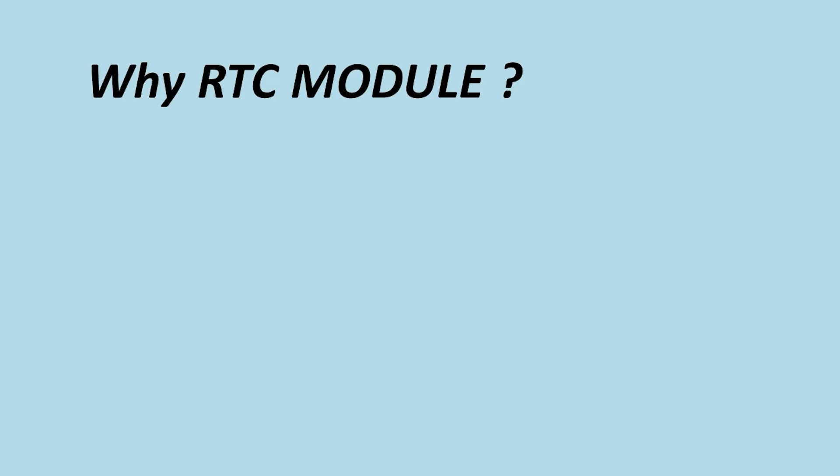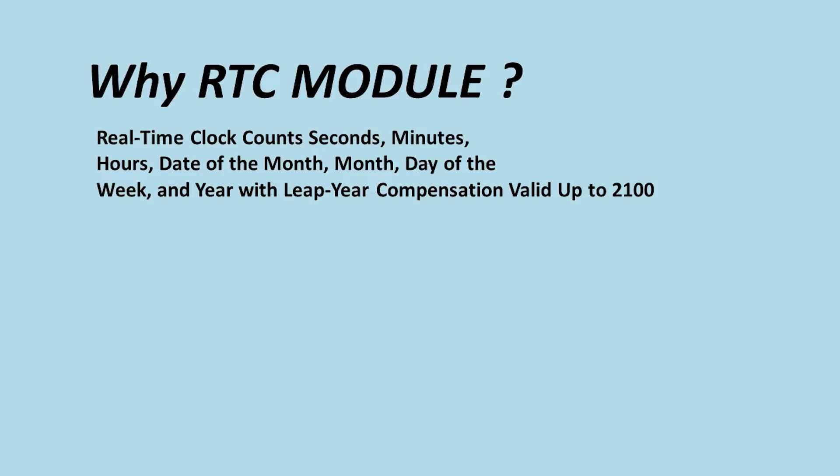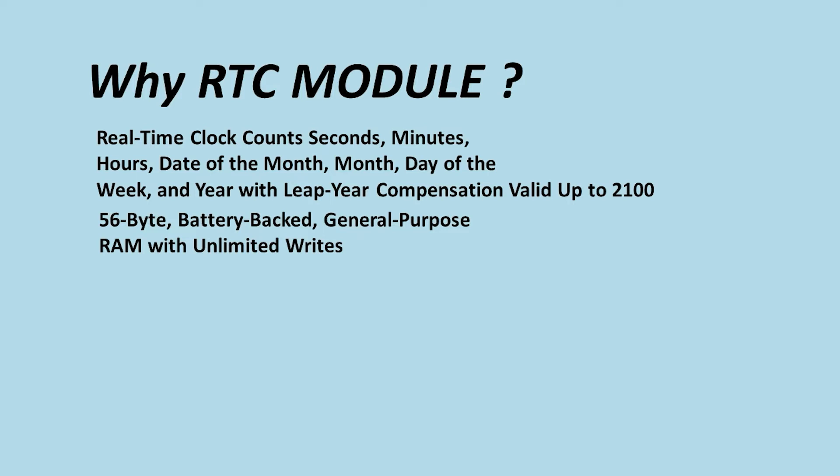Why use an RTC module? This kind of module provides a real-time clock based on minutes, seconds, and hours. You can put a calendar in your project based on the month name, date, and which date you are on. It provides very exact time and calendar, and can compensate the difference between the number of days — for example, some months have 28, 29, 31 days — this module handles that automatically.